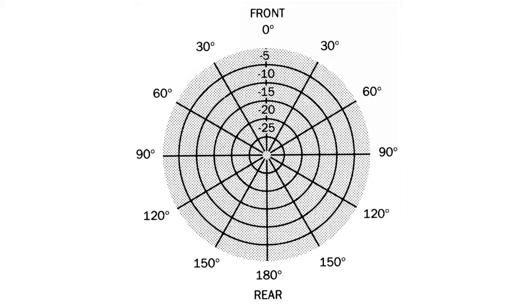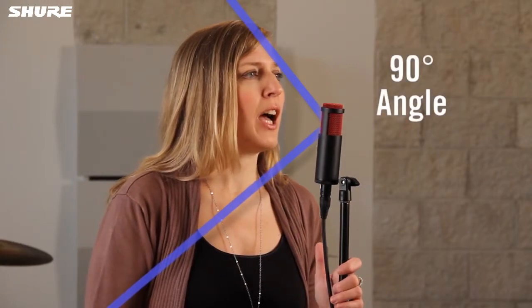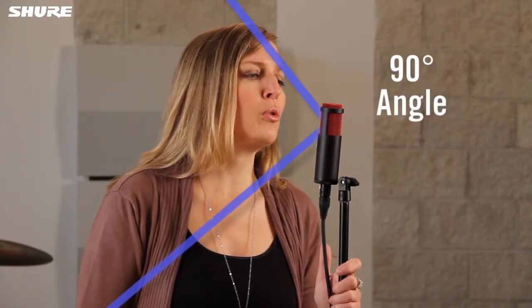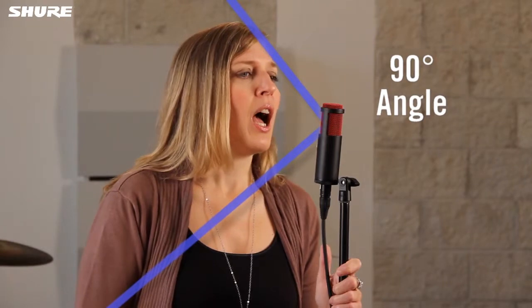A bi-directional microphone is equally sensitive to sounds coming from the front and the rear of the mic and least sensitive to sounds coming from the sides. Bi-directional mics have a very narrow pickup angle. This makes a bi-directional mic useful for isolating one voice or instrument that is surrounded by other sound sources, as long as there is nothing directly behind the mic.